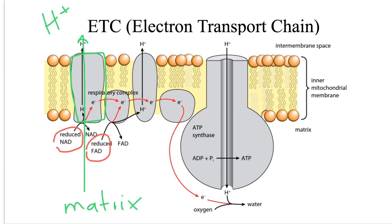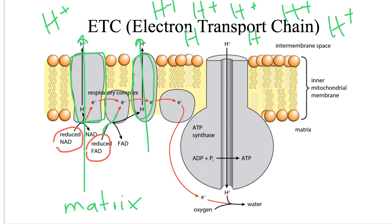The same happens with reduced FAD, which gives the hydrogen ion at a different point. The electron is picked up, the protein is energized by receiving the electron, and this energy is used to pump the proton from the matrix into the intermembrane space. So the proton concentration increases in the intermembrane space and an electrochemical gradient is formed. The inner membrane is basically impermeable to protons, so hydrogen ions can only be pumped into the intermembrane space using energy provided by electrons transferred along the ETC, and the protons stay there, increasing in concentration and forming a gradient.